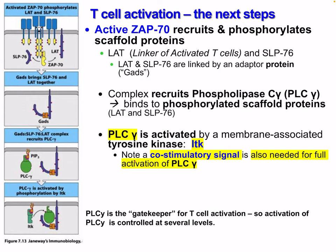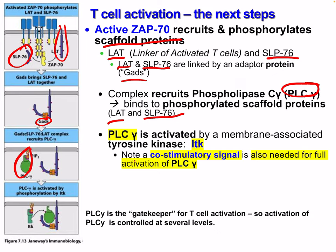Active ZAP70 recruits and phosphorylates scaffold proteins: LAT, which is linker of activated T cells, and SLP76. LAT and SLP76 are linked by an adapter protein called GADS. This complex recruits phospholipase C gamma (PLC-gamma), which binds to the phosphorylated scaffold proteins LAT and SLP76. PLC-gamma is activated by a membrane-associated tyrosine kinase. A co-stimulatory signal is also needed for full activation of PLC-gamma.